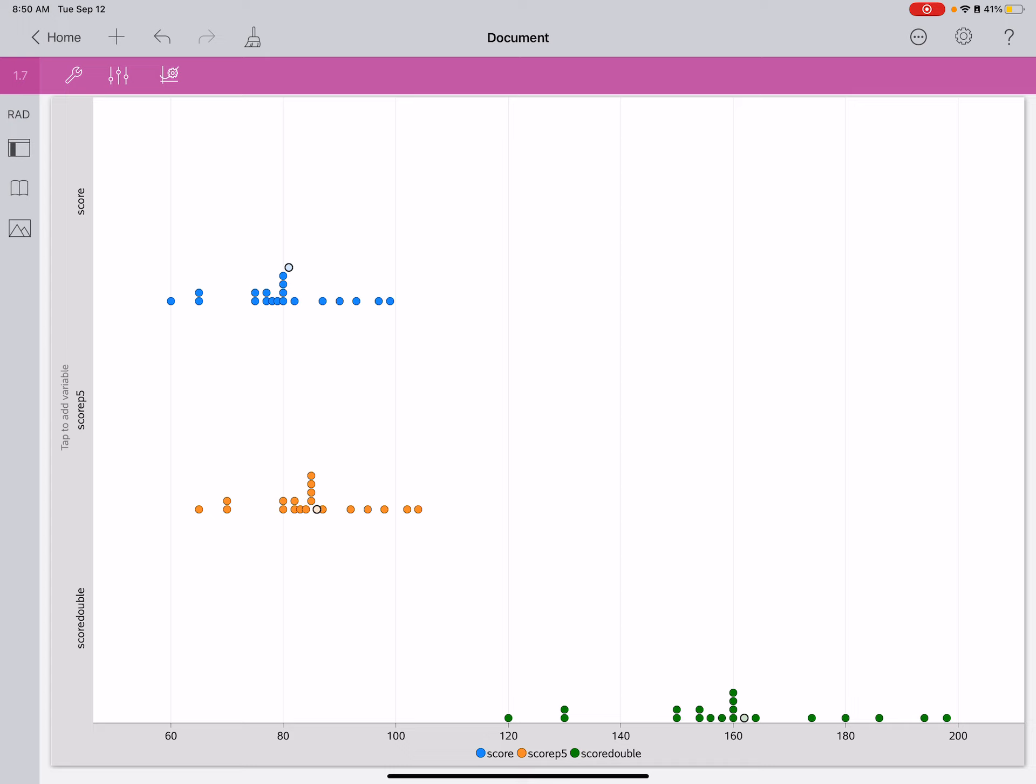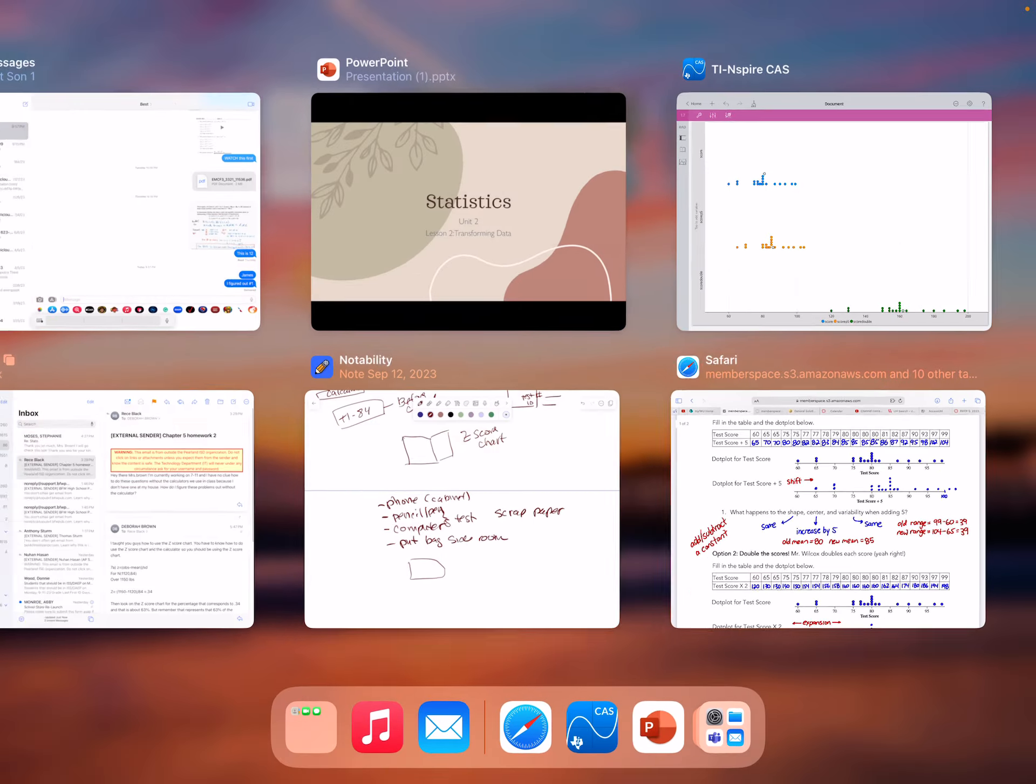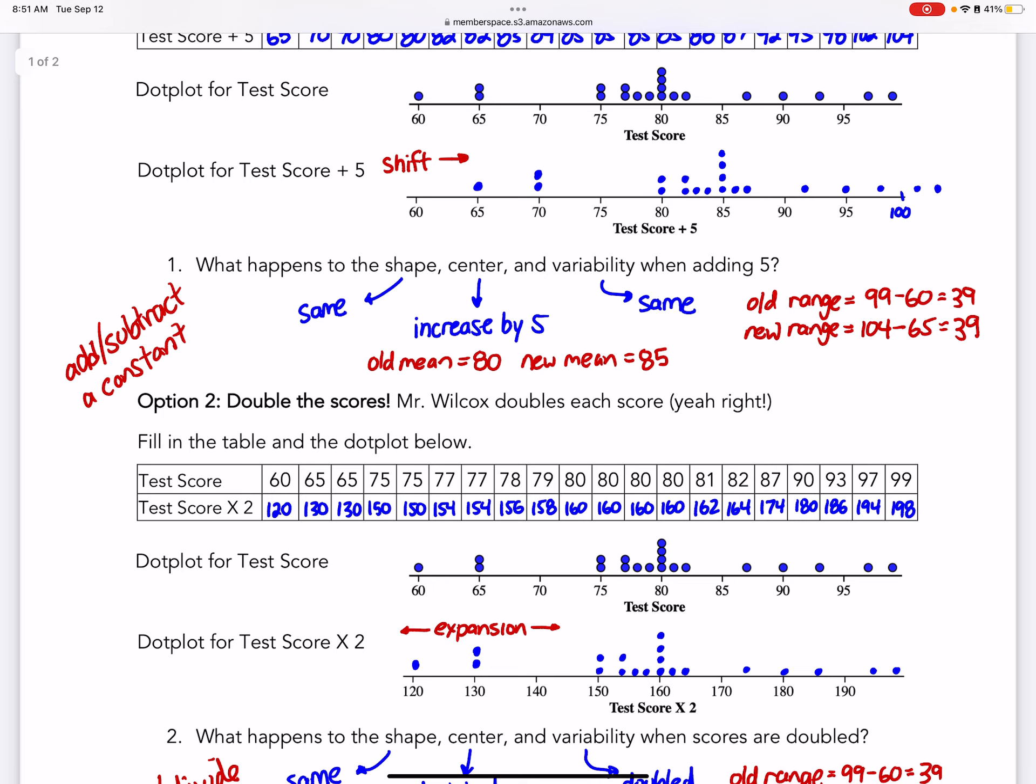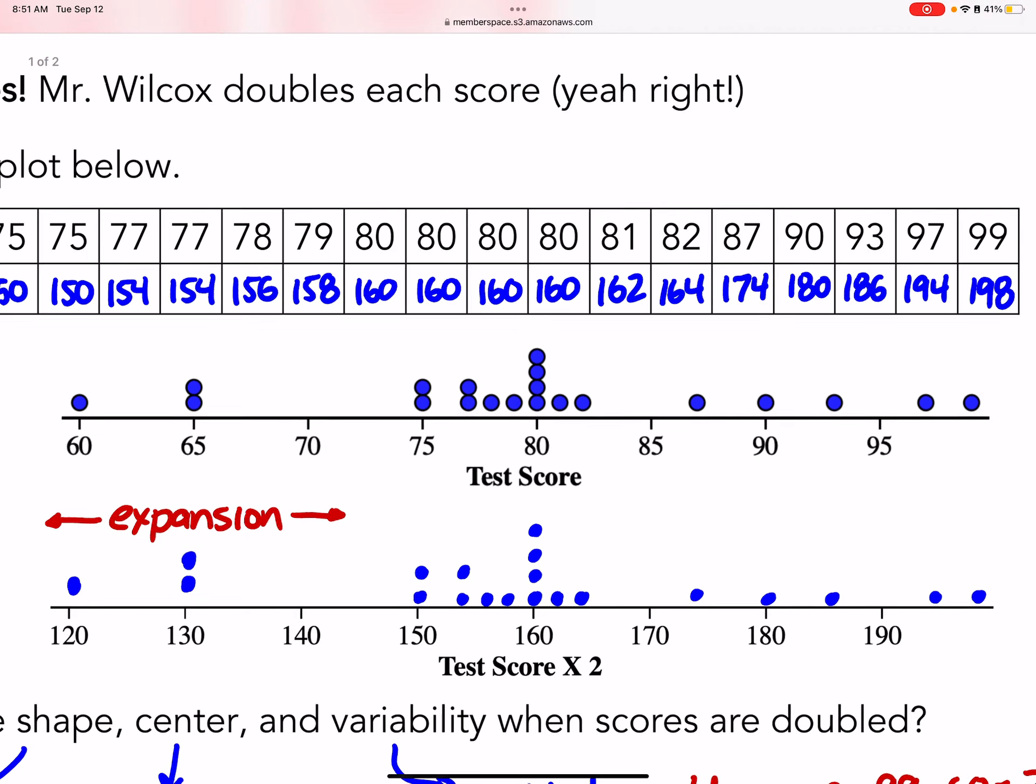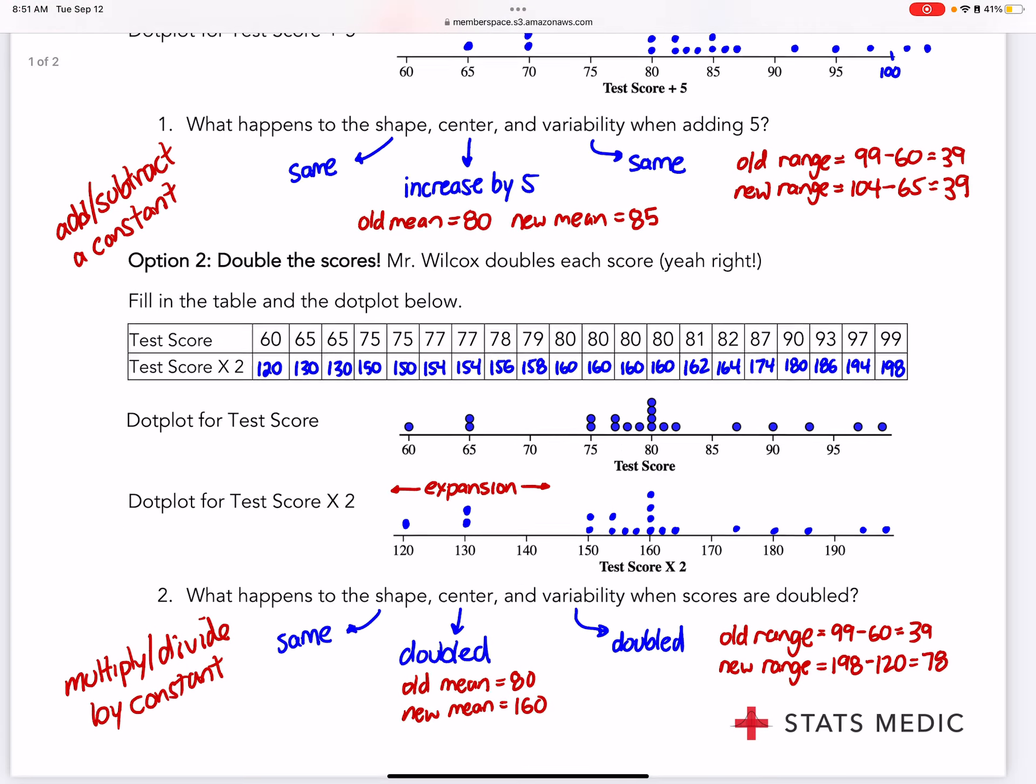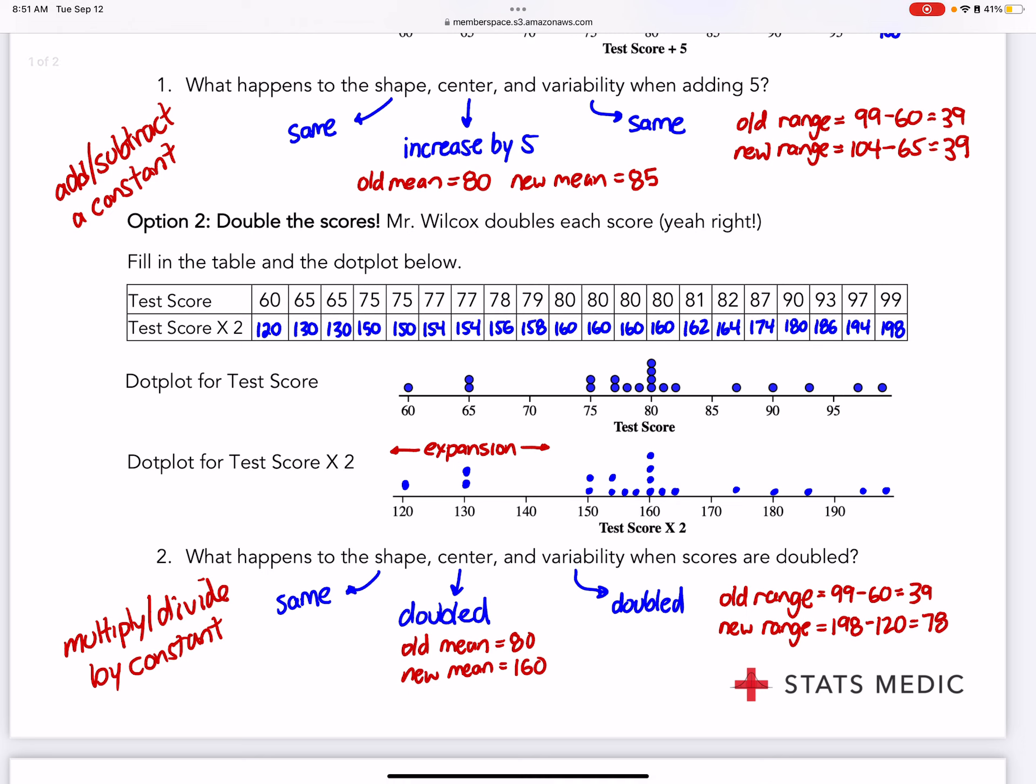Then tell me what happens. You can see the expansion. It's hard to see the expansion because we're limited to our paper, but you can see 60 changed to 120. You can see how everything changed by doubling. Let's see what happens to shape, center, and spread. You can see the center was at 80 and now it's at 160, so it doubled. You can see that the shape stayed the same. If you threw a blanket over it, it's the same shape. It's just spread out more.